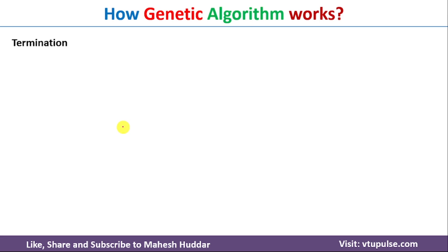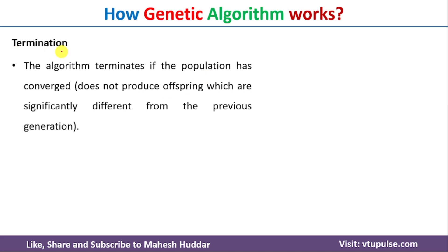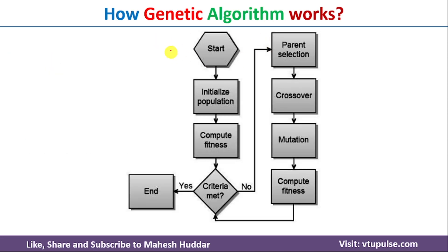The last step in genetic algorithm is termination. The algorithm terminates when the population has converged — meaning the newly generated offspring are similar to the existing individuals in the generation and are not significantly different. This can be illustrated with a flowchart: we start with the initial population, then find the fitness score for each individual.